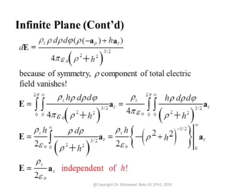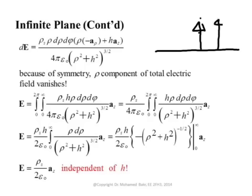This result is remarkable because it tells us that the electric field does not depend on the distance from the plane. If you have a charged infinite plane, the field here is the same as the field at any other distance — they are all pointing normal to the plane and all have the same strength, even at a very far distance. In reality, we don't have infinite planes; we have planes of finite charge like those used in capacitors, and in that case the electric field does decay. But for the infinite plane, this hypothetical case gives a nice expression that depends only on the surface charge density and the permittivity.